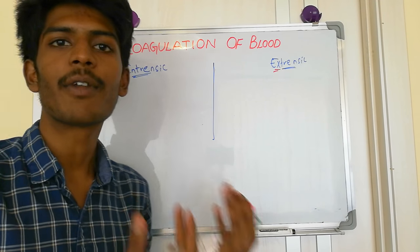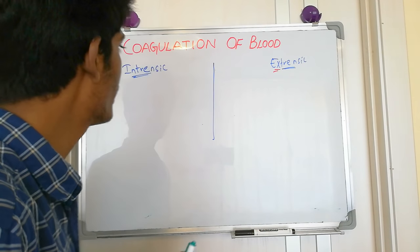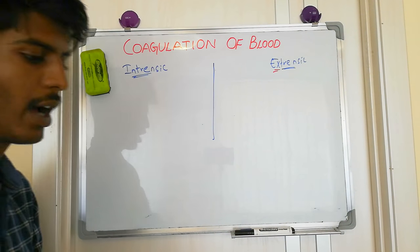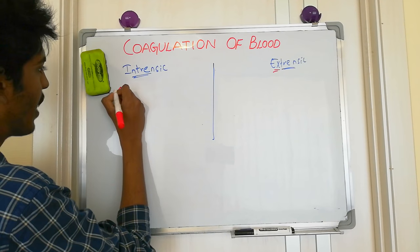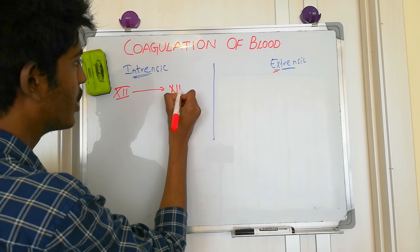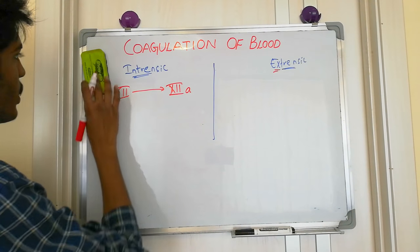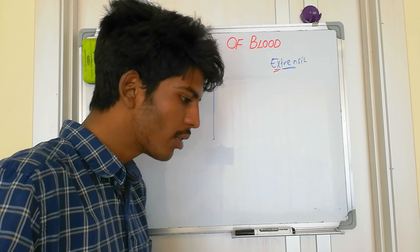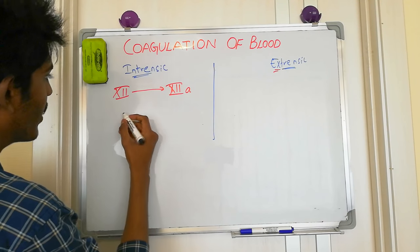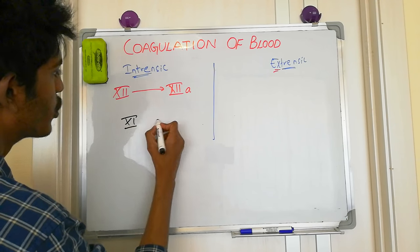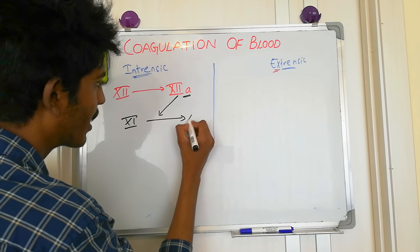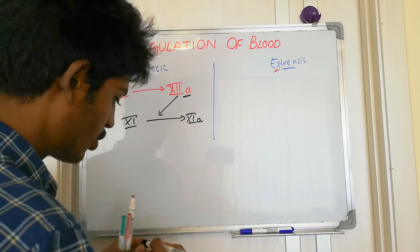In the intrinsic pathway, whenever there is damage to the blood vessel, the first thing that happens is factor 12 gets activated. Factor 12 — that is Hagman's factor — gets activated and then activates factor 11. Activated factor 12 (Hagman's factor) activates factor 11, converting it to its active form.